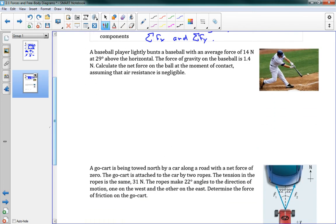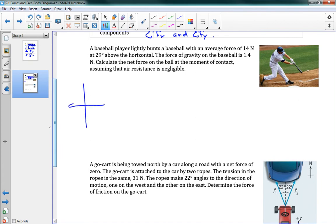So this problem says that a baseball player lightly bunts a baseball with an average force of 14 newtons at 29 degrees above the horizontal. The force of gravity on the baseball is 1.4 newtons. Calculate the net force on the ball at the moment of contact, assuming that air resistance is negligible. So to do this, we draw our crosshairs. We draw our forces. So we can say that we have a force of 1.4 newtons in this direction. This is 29 degrees. And then we have another force. Oh, I'm sorry. That's not 1.4. That's 14 newtons in that direction. So this is 14 newtons. And then downwards we have 1.4 newtons.